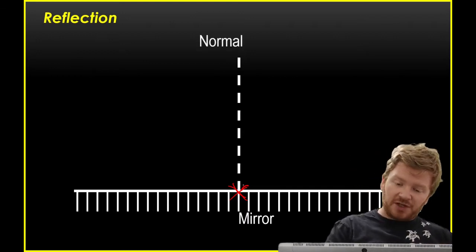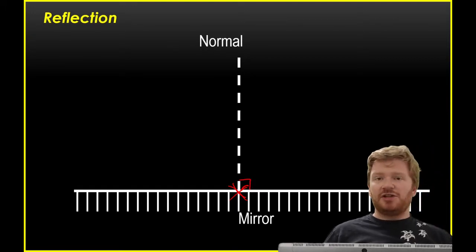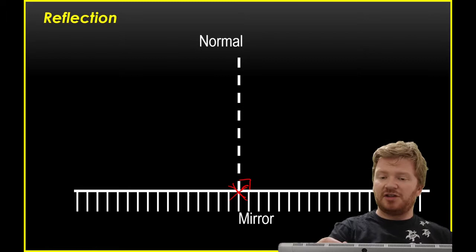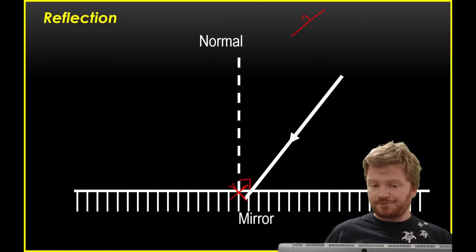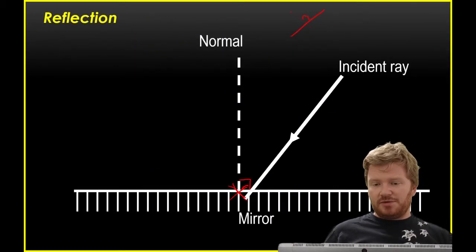And a normal is always at 90 degrees to the surface that it's being hit at. And so if I had a line like this, I would measure 90 degrees, and that would be my normal there.